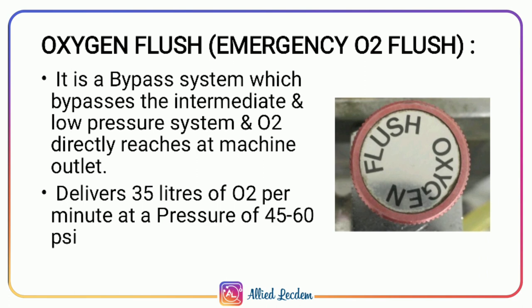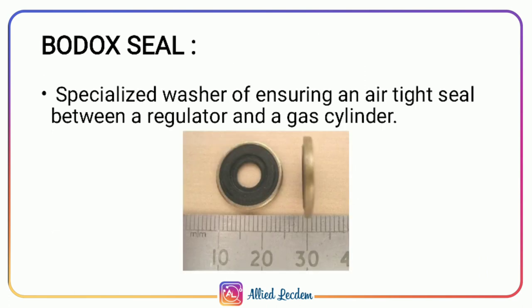The oxygen flush is an emergency bypass system which bypasses the intermediate and low pressure systems so that oxygen directly reaches the machine outlet. It delivers 35 liters of oxygen per minute at a pressure of 45 to 60 psi. The Bodok seal is a specialized washer or gasket-type structure — a rubber ring that ensures an airtight seal between a regulator and the gas cylinder.